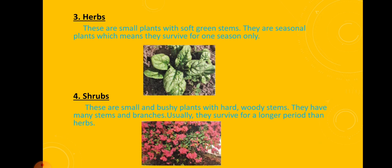Next is shrubs. These are small and bushy plants with hard woody stems. They have many stems and branches and usually they survive for a longer period than herbs. Like rose, hibiscus, lime, cotton, bougainvillea. These are some examples of shrubs.